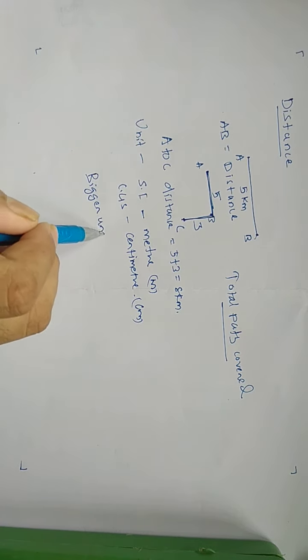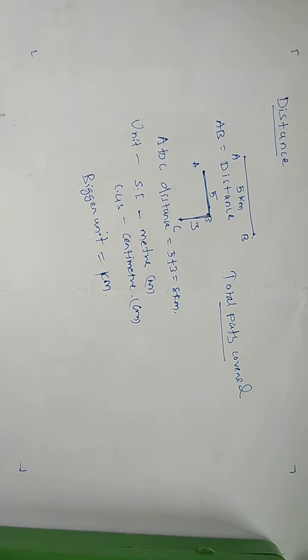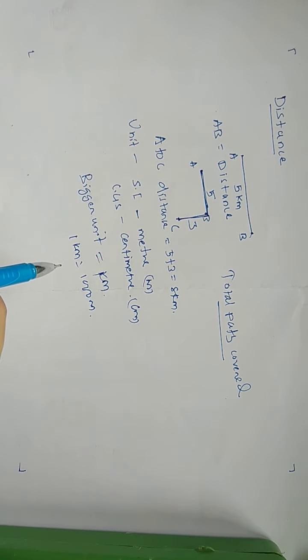The bigger unit is kilometer, written as km. There is a relation between meter and kilometer: 1 km is equal to 1000 meters. So this is distance - the actual path, the total path covered by a body.